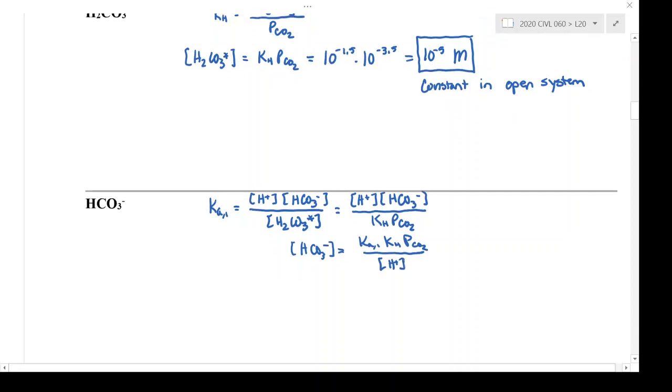Next I'll substitute in some numbers: Ka1 is 10 to the minus 6.3, Kh is 10 to the minus 1.5, and pCO2 is 10 to the minus 3.5, still over H plus. This gives me a result of 10 to the minus 11.3 over H plus, and that is our expression for bicarbonate. Unlike carbonic acid, this is not constant in an open system but is a function of pH. As the pH changes, so does the bicarbonate concentration.